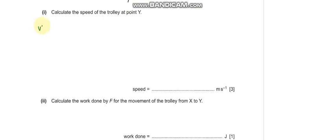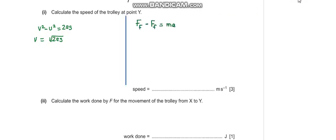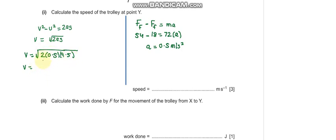Part 1: calculate the speed of the trolley at point Y. Using v² − u² = 2as, with initial speed 0, we need acceleration first. From F = ma, the forward force minus friction equals ma, giving a = 0.5 m/s². Substituting the values of a and s, the velocity becomes 3.1 meters per second.